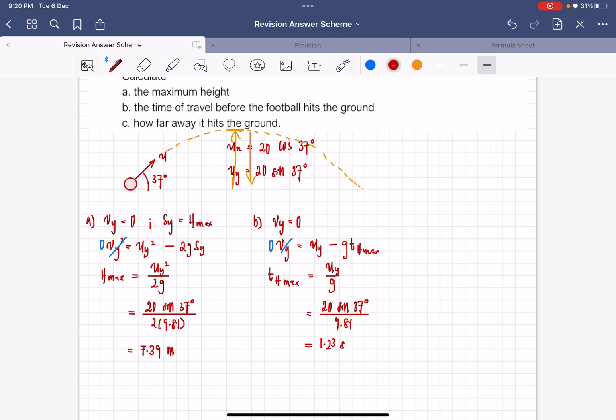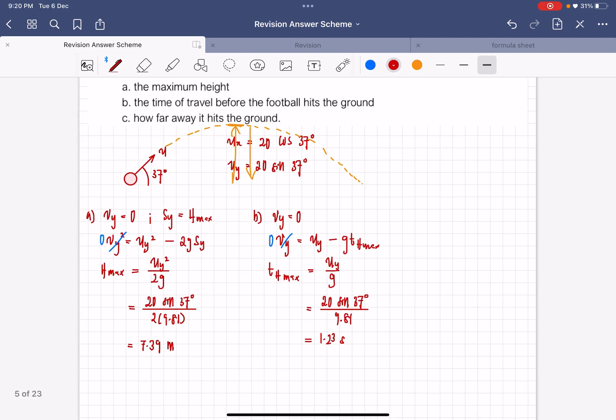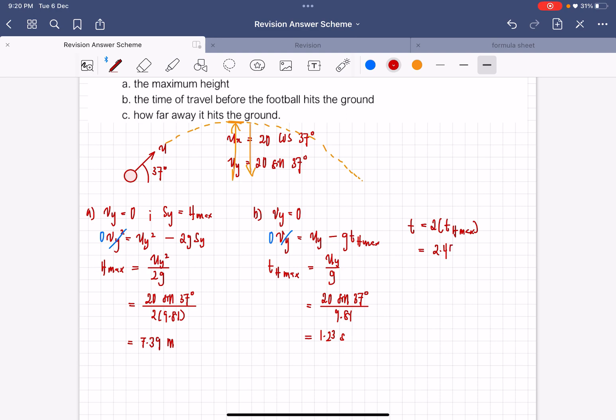So this is only to reach the maximum height. The time of travel is actually twice the time to reach its maximum height. So you just need to multiply by 2. 1.23 times 2 gives us 2.46 seconds as the time of travel.